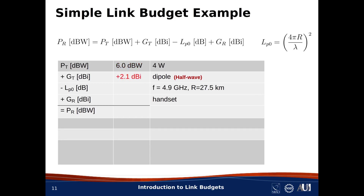Now, the dipole. The directivity of a dipole is 1.64 in linear units, which is 2.1 dBi. We have no information about the efficiency of this dipole. However, we've noted in previous lessons that dipoles can be very efficient. So, for now, we'll assume the efficiency is 1, that is 100%. Again, this might be something we want to revisit later, but this value is okay to get started. So, we have entered +2.1 dBi for the gain of the transmit antenna.